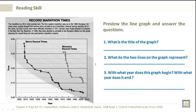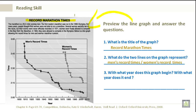Reading Skills. Preview the line graph on your left and answer the questions. What is the title of the graph? That would be Record Marathon Times. What do the two lines on the graph represent? You have the men's record times on one line of the graph, and the women's record times on the other line. With what year does the graph begin and end? That would be 1900 and 2010, respectively.